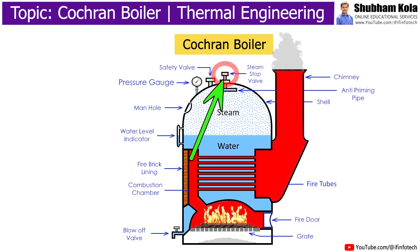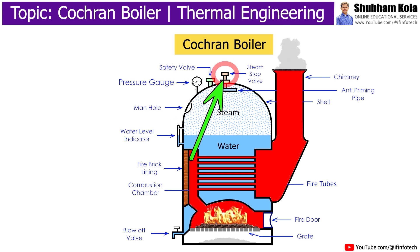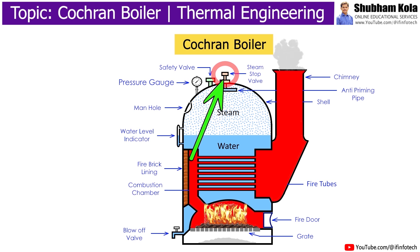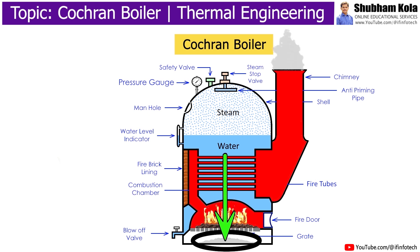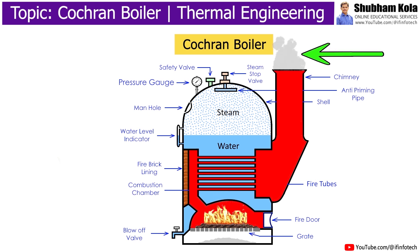The steam stop valve regulates the supply of steam outside. This steam is used in turbines to generate electricity. When fuel is burned completely and it becomes ash, it comes down to the ash pit and smoke is released to the atmosphere through the chimney.